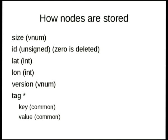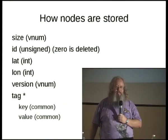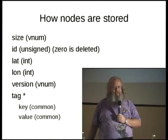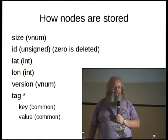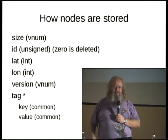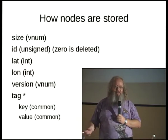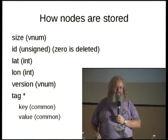I store a node as a size — which is a vnum — then an ID. I'm actually using a standard 32-bit number for the ID because there are more than two to the 28th nodes, and I determined that on average it would cost more space to use a vnum given the number of 5-byte entries needed to store a full 32-bits, compared to just using a 4-byte integer.